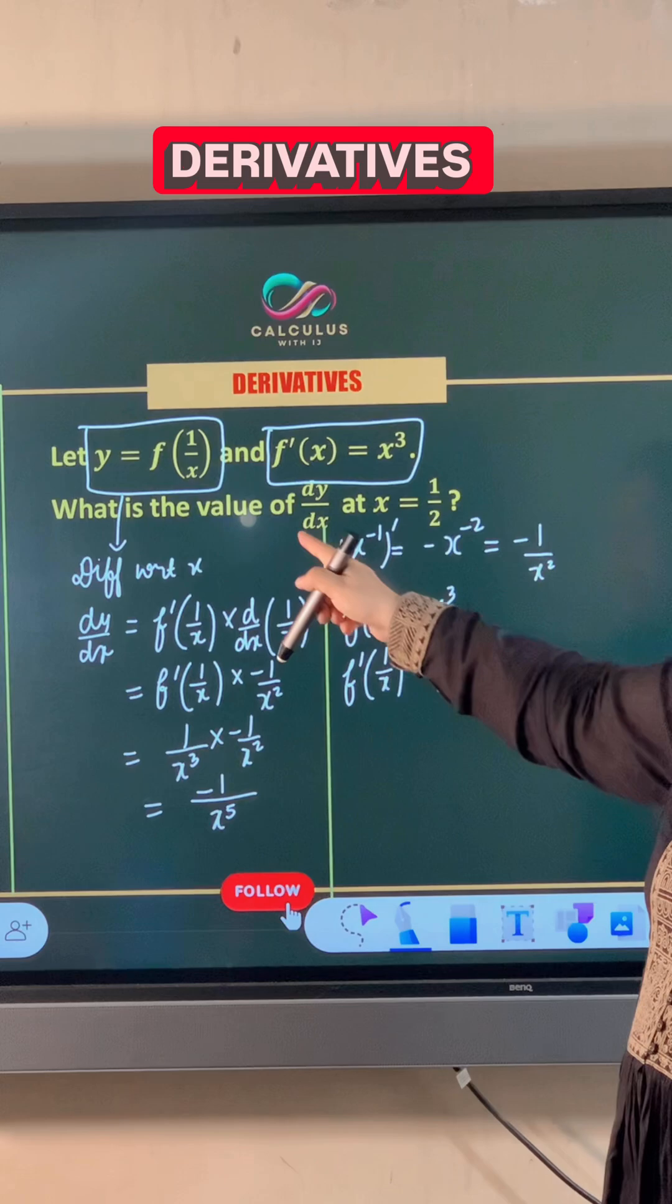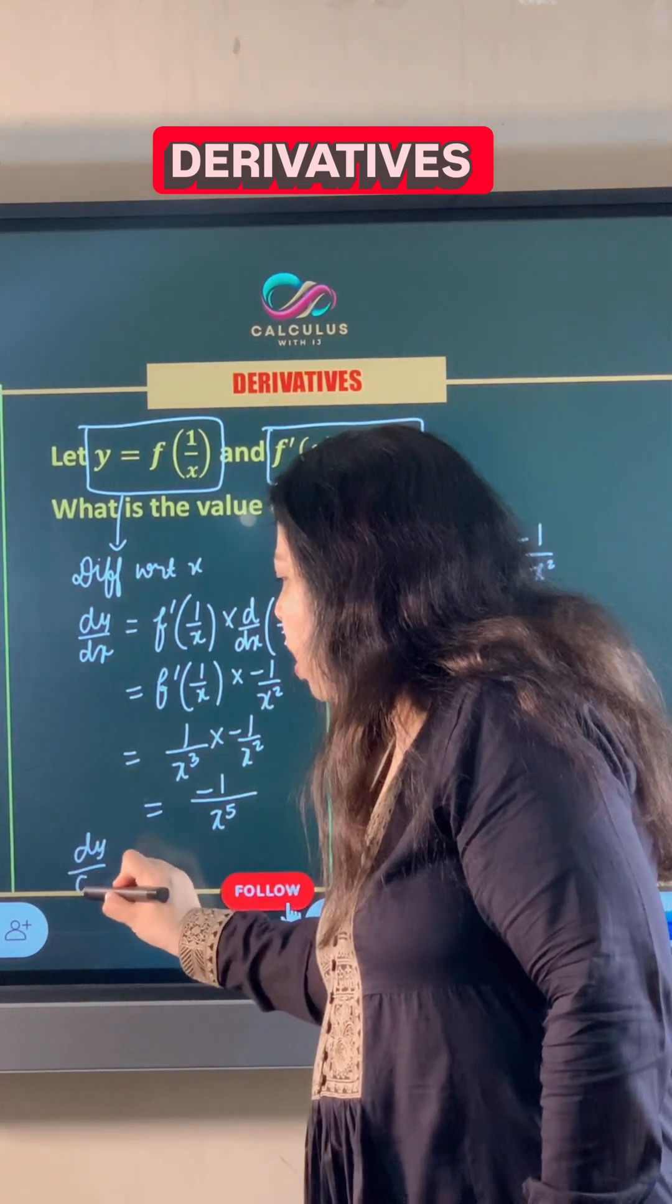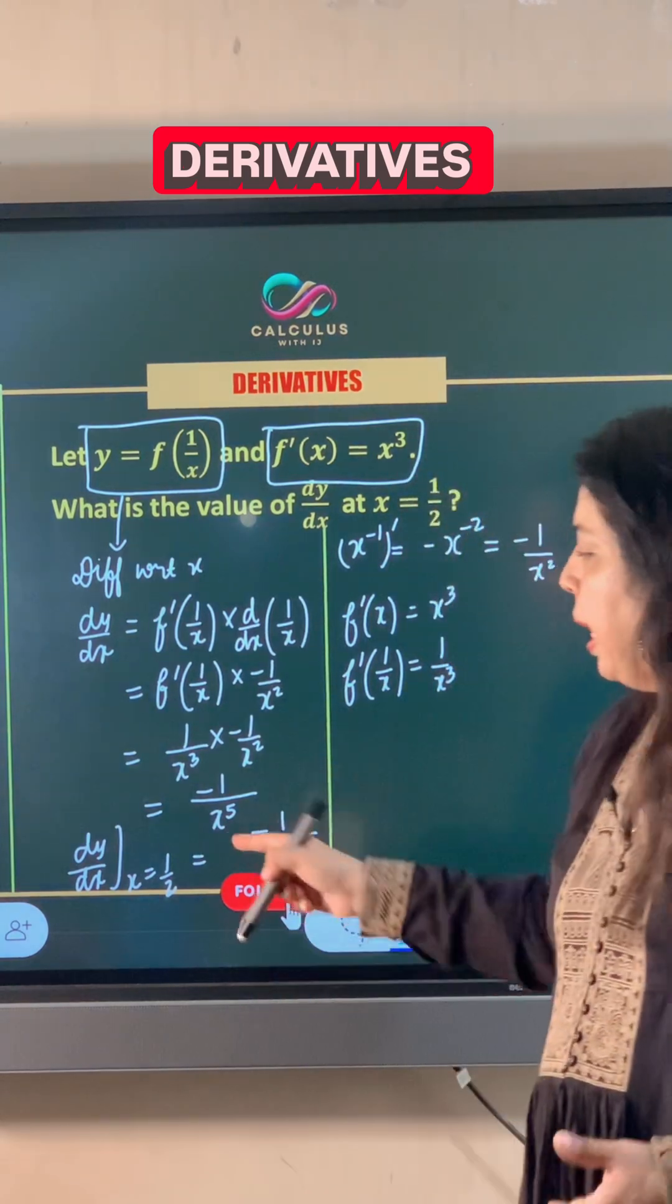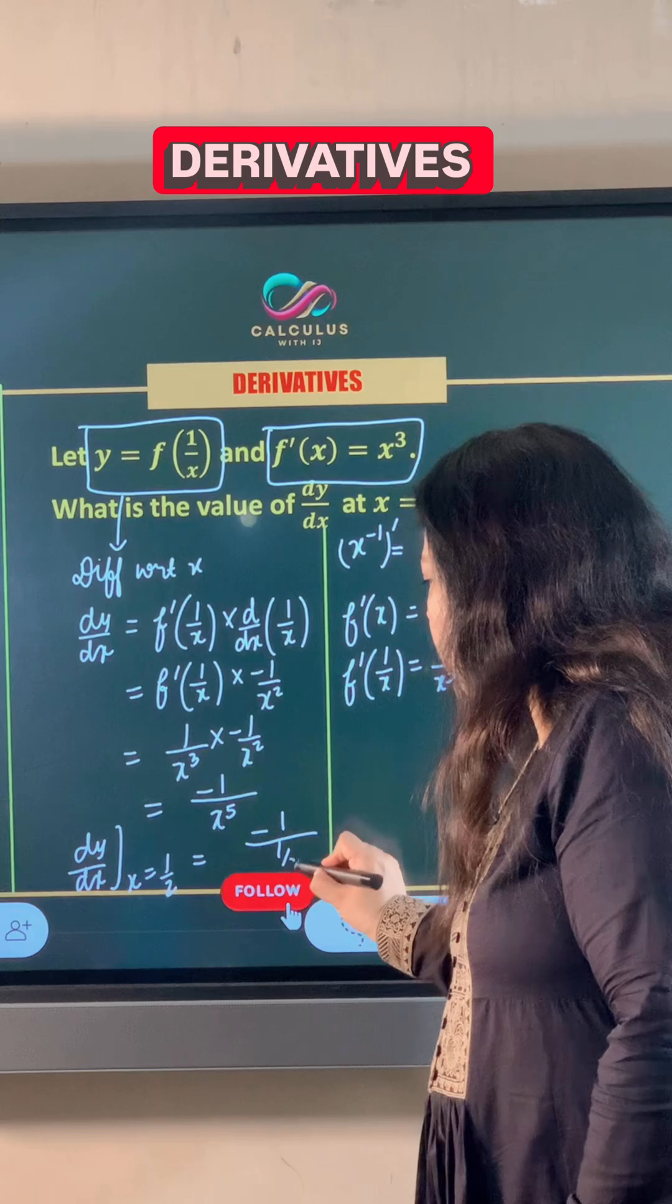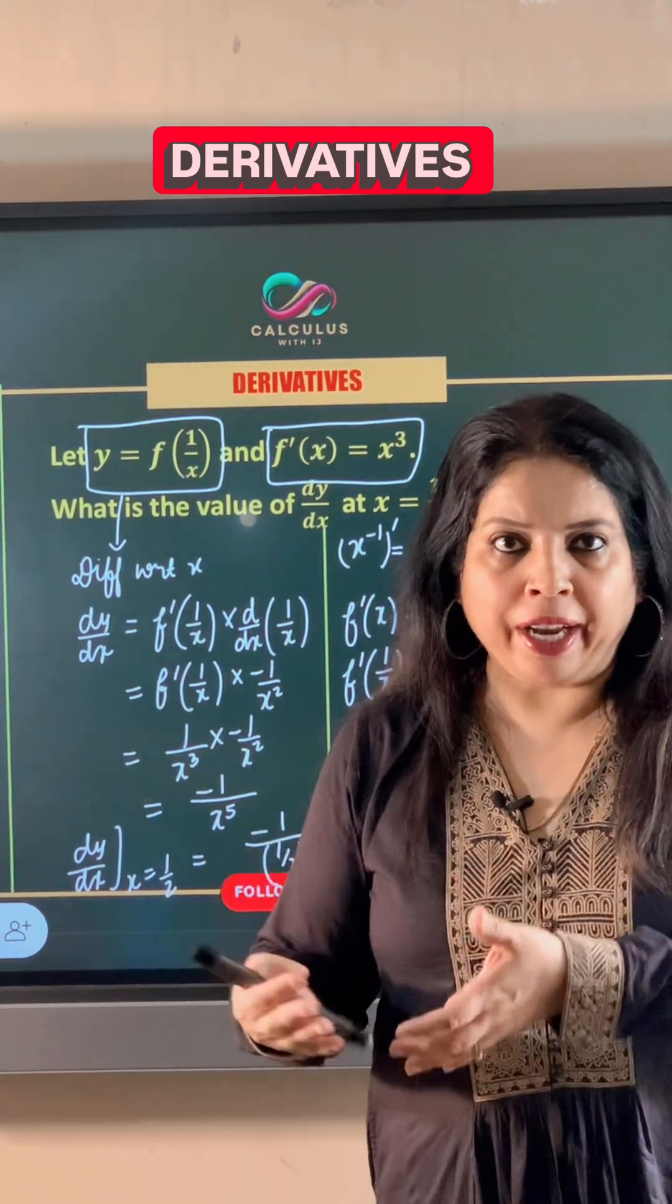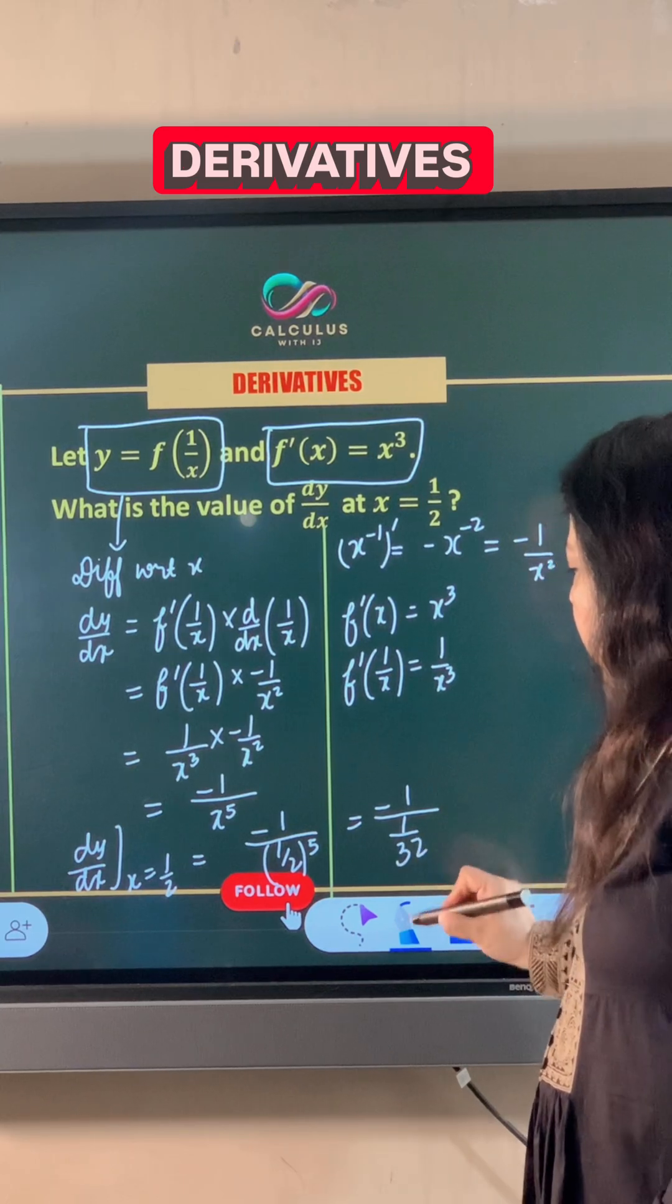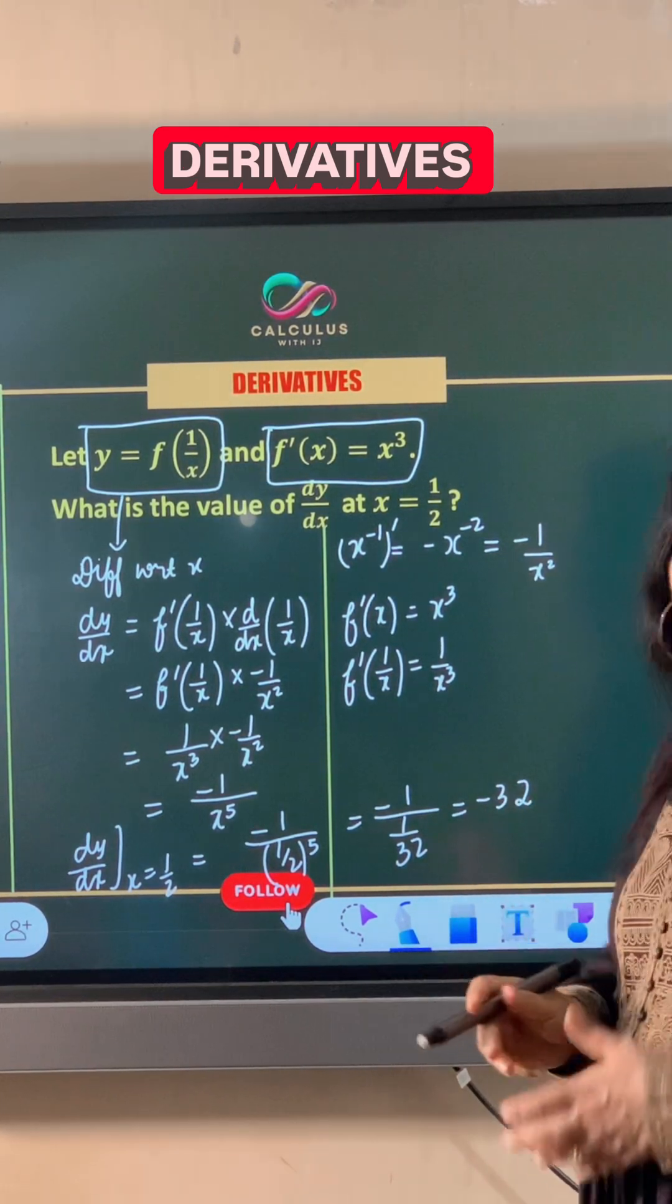Now we have to find the value of dy by dx at x equals 1 by 2. The value of first order derivative when x equals 1 by 2 is negative 1 upon 1 upon 2 raised to power 5. 2 raised to power 5 is 32, so this becomes negative 1 upon 1 upon 32, which gives us negative 32.